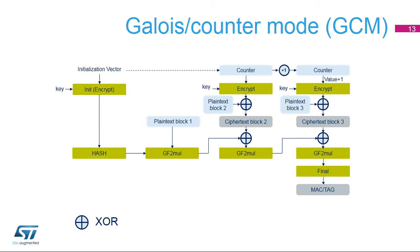In Galois counter mode, or GCM, the plaintext message is encrypted while a message authentication code is computed in parallel, thus generating the corresponding ciphertext and its MAC, also known as authentication tag. It is based on the AES counter mode for confidentiality and uses a multiplier over a fixed finite field for generating the tag. It requires an initialization vector at the beginning. Part of the GCM message (block 1) might not be encrypted — this block is called the authenticated header.